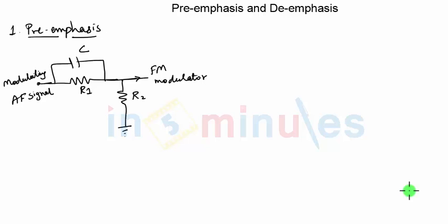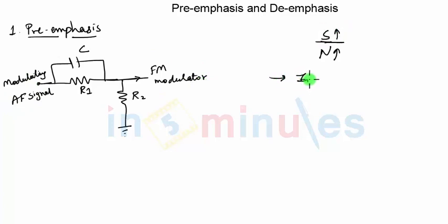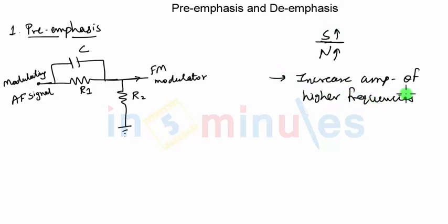To achieve a constant SNR for the entire frequency range, we will have to increase the signal to noise ratio only for high frequencies, since at low frequencies the effect of noise is already very less. Because the effect of noise increases at high frequencies, to keep a constant signal to noise ratio we will have to increase signal power also at high frequencies. So before giving the modulating signal to the FM modulator, we will have to increase the amplitude of higher frequencies in the modulating signal.